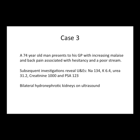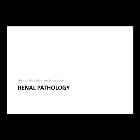The third and final case: a 74-year-old man who presents to his GP with increasing malaise and back pain associated with hesitancy and poor stream of urine. Investigations show sodium 134, potassium 6.4 (grossly elevated), urea 31.2 (grossly elevated), creatinine 1000 (sky high), and a PSA that is very high — normal is less than 4. An ultrasound shows bilateral hydronephrotic kidneys. Those are the three cases to keep in mind as we go through.